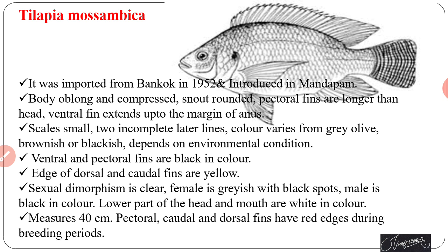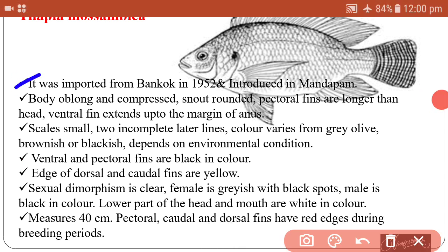Another fish in this category is Tilapia mossambica, a well-known brackish water fish imported from Bangkok in 1952. The body is oblong and compressed. The snout is rounded, pectoral fins are longer than the head, and ventral fins extend up to the margin of the anus. Scales are small, and two incomplete lateral lines are found on the body.